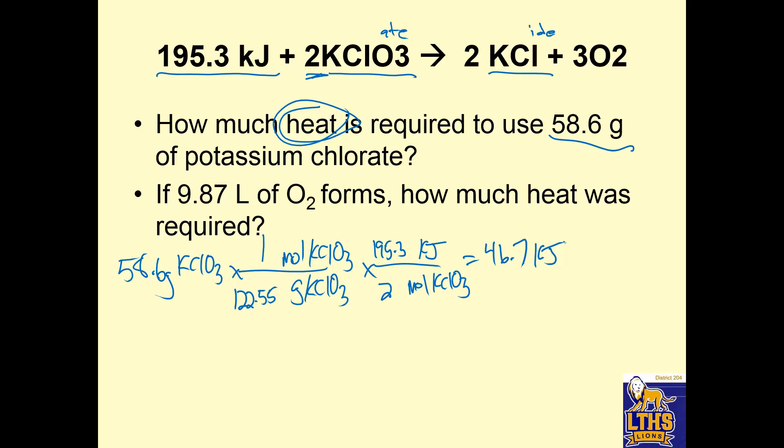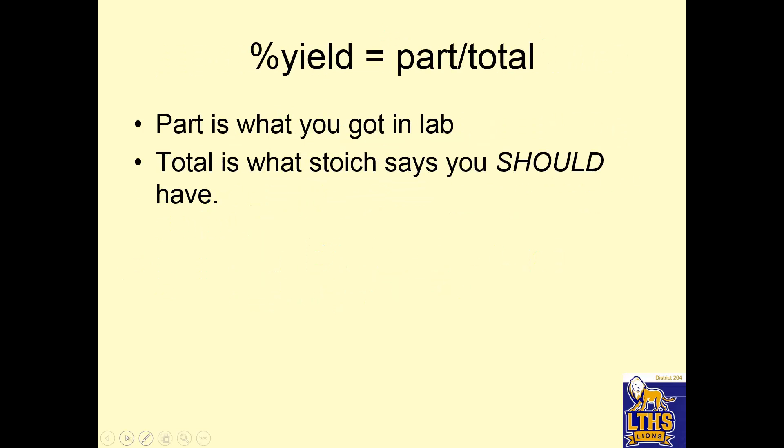If 9.87 liters of O2 form how much heat is required, that's a mistake on my part. Oops, please forgive. Percent yield equals part over total. Part is what you got in lab. Total is what stoichiometry, that means math, says you should have. So let's take a look at that.